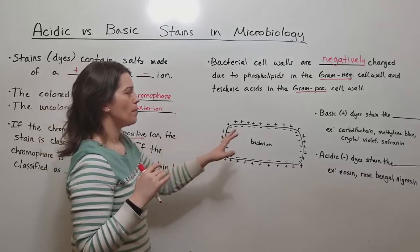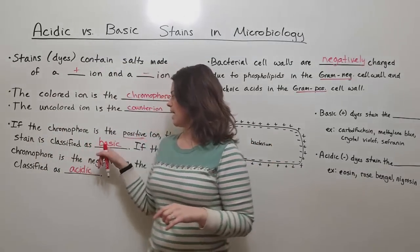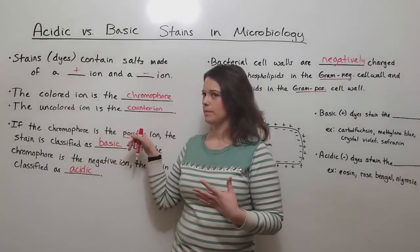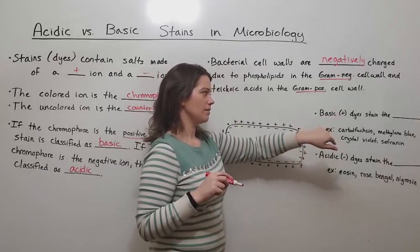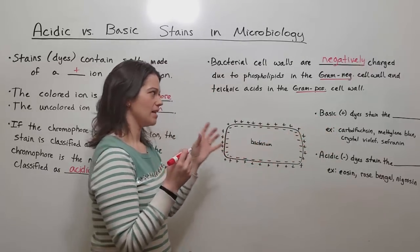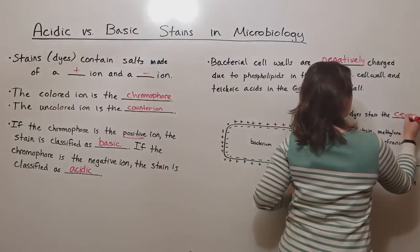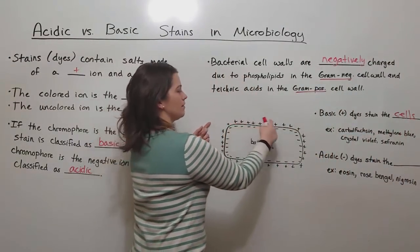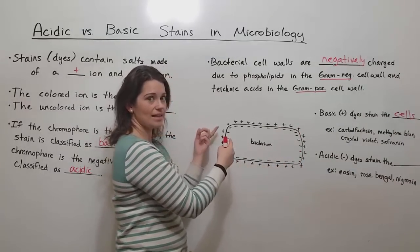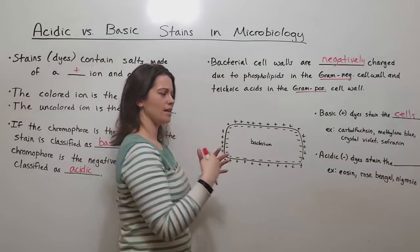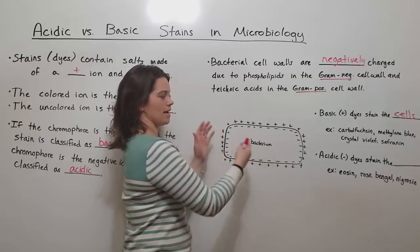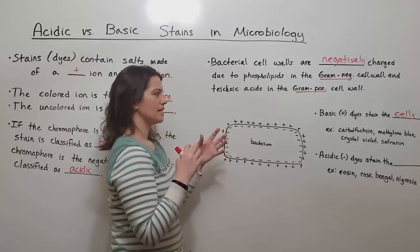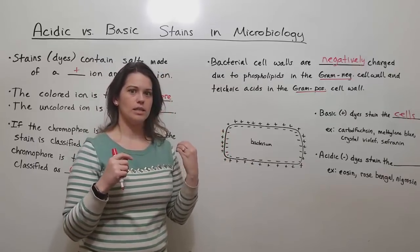And so basic dyes - remember basic dyes being the ones that have the chromophore being positively charged - basic or positive dyes actually stain the cells themselves. This is when you have the positively charged chromophore being attracted because opposite charges attract. So the positively charged chromophore is attracted to the negatively charged cell wall of the bacteria, and the basic dye stains the cells themselves.